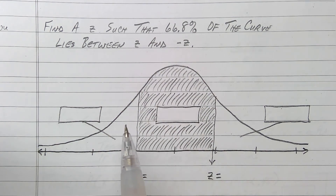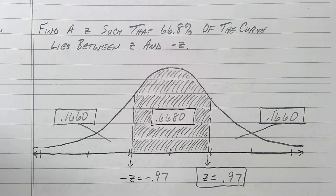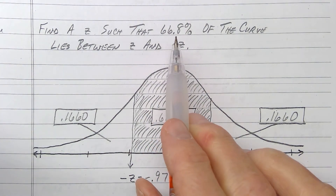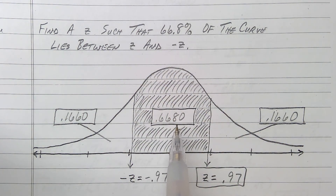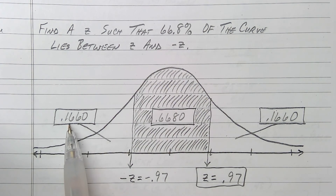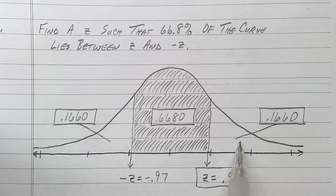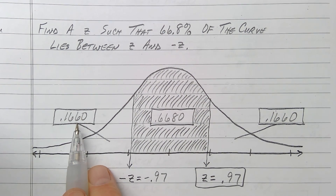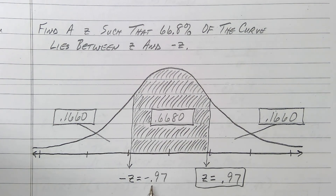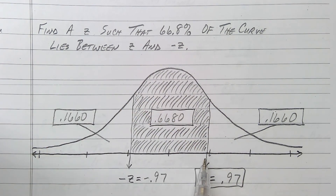Here's a practice problem: find Z such that 66.8% of the curve lies between Z and negative Z. Move the decimal: 0.6680 in the middle. Take 1 minus 0.6680 and divide by 2: gives 0.1660 on each tail. Look up which negative Z has area to the left of 0.1660 — that's negative 0.97. But they want the positive Z, so the final answer is Z = 0.97.